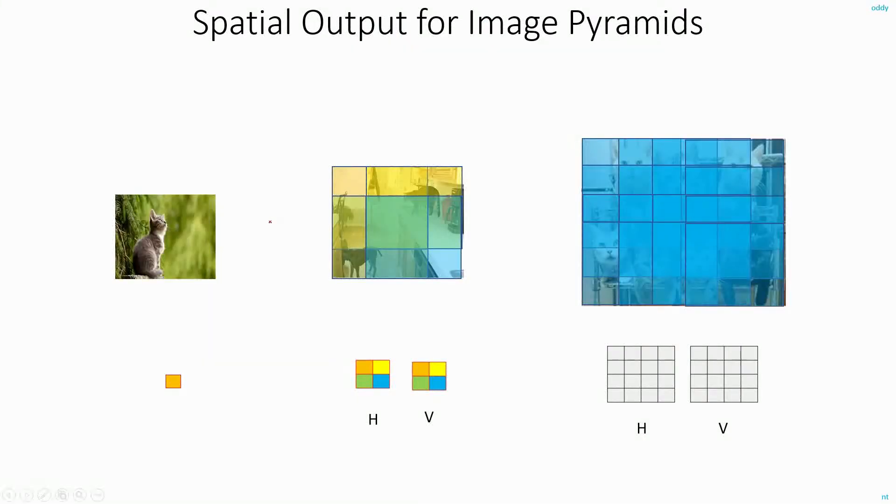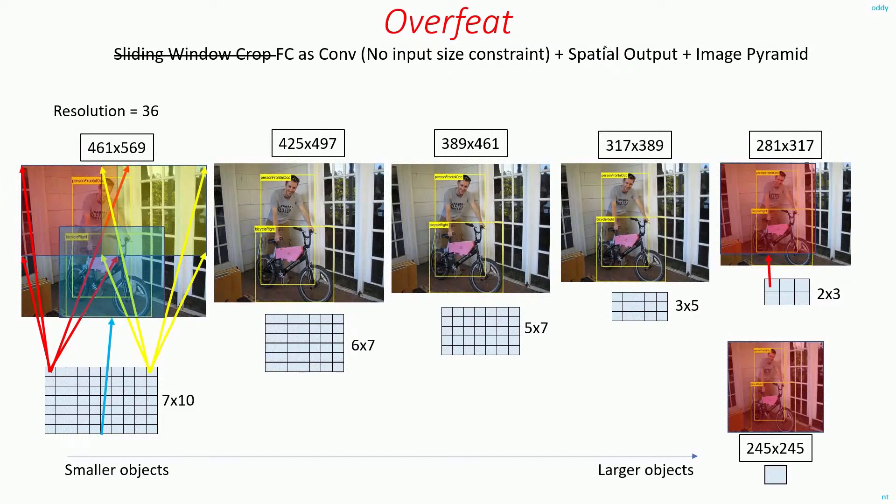So now I was able to feed the entire image as input to the convolutional neural network, and combined with the concept of image pyramid, I can get the spatial output. That is, by using images of different sizes and different scales, I'll be able to detect different objects of different sizes at different locations. So both my problems, the problem of location and scale, are now solved. This is the intuition behind OverFeat.